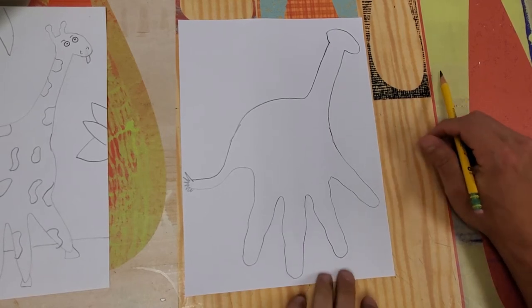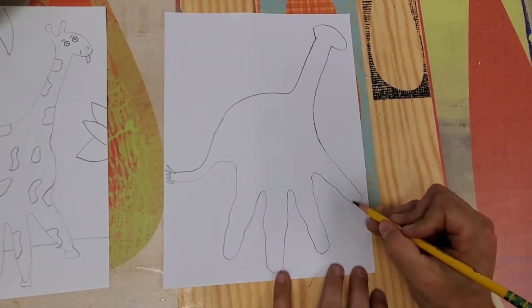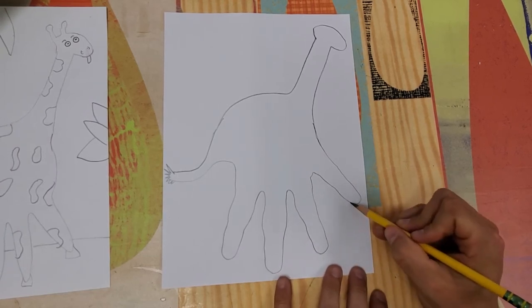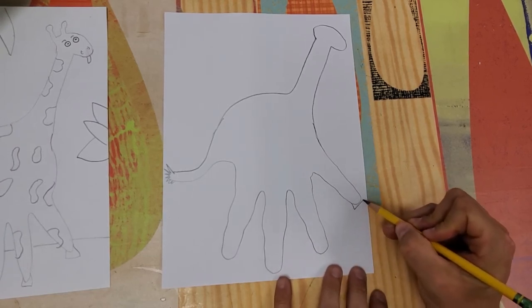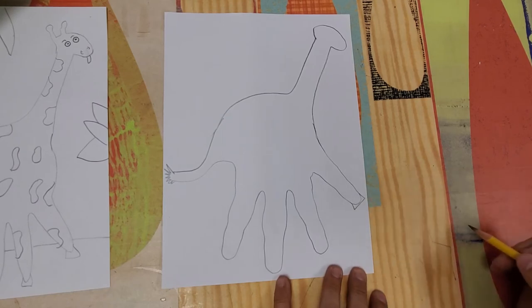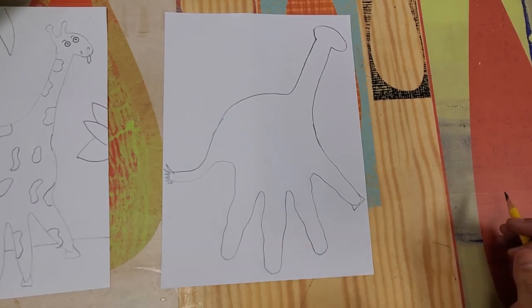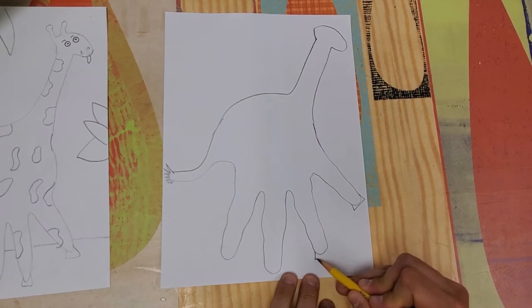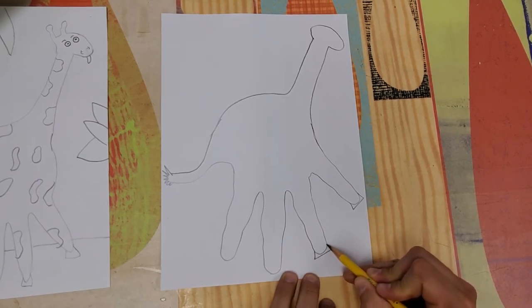Down here at the bottom I'm going to take each foot on my giraffe and add something that looks a little more like a hoof on a giraffe. They have a nice little hoof shape down there. So I'm going to take out a line, come across, and go back up.